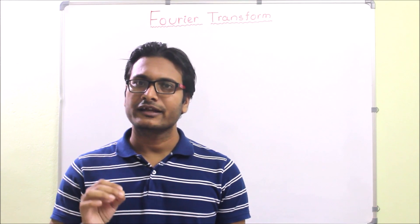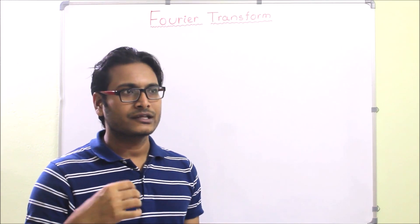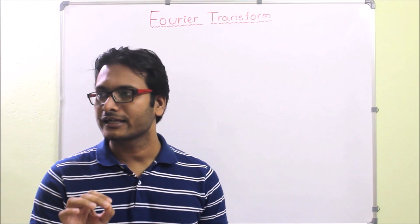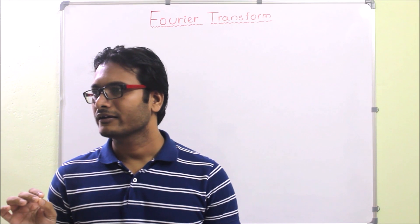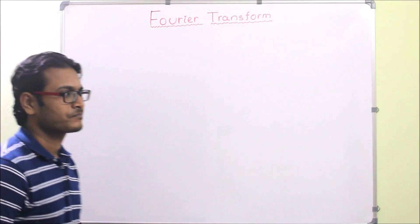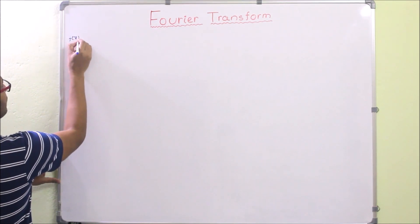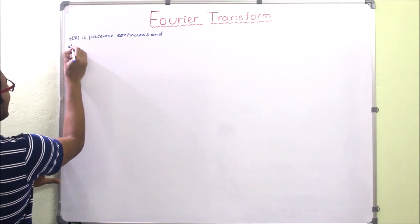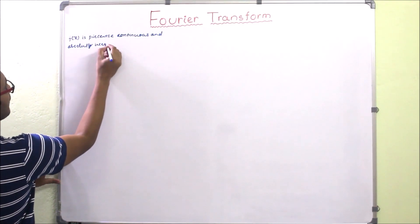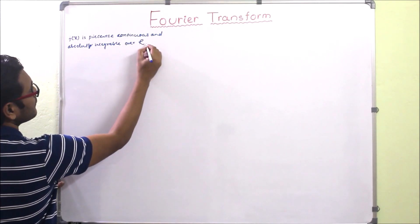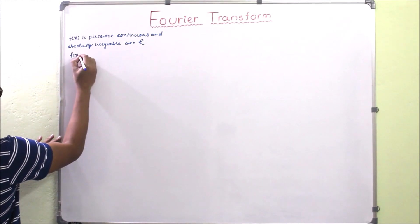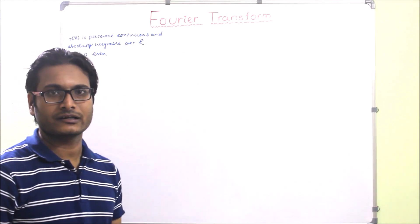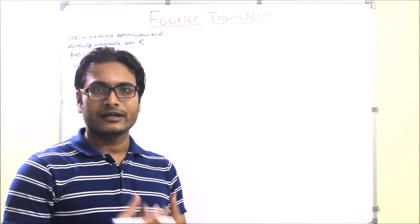If the function is even, we will get the Fourier Cosine Transform. If f(x) is odd, we will get the Fourier Sine Transform. The condition is that f(x) is piecewise continuous and absolutely integrable over ℝ. If f(x) is even, we can write the Fourier integral — the Fourier Transform will be derived from the Fourier integral.